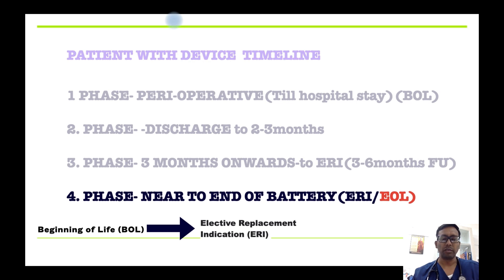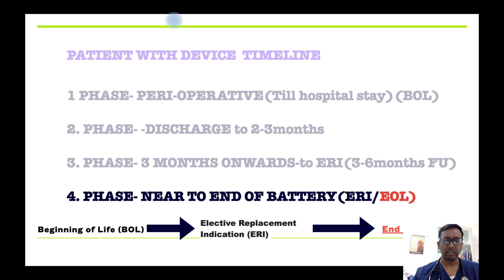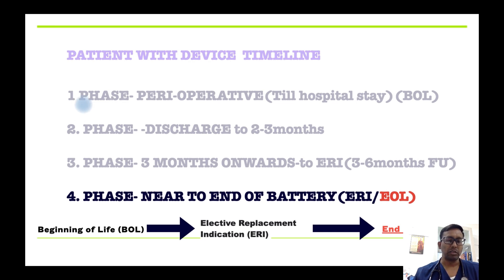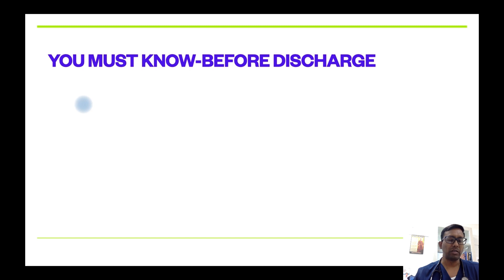There are three battery status phases: beginning of life, ERI (elective replacement — when the device enters reserve mode), and EOL (end of life — when the battery is almost fully drained). Reaching EOL requires emergency replacement. At ERI, plan for replacement in discussion with your doctor and the company.